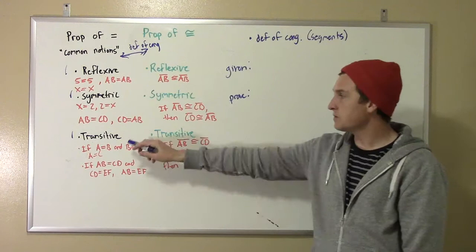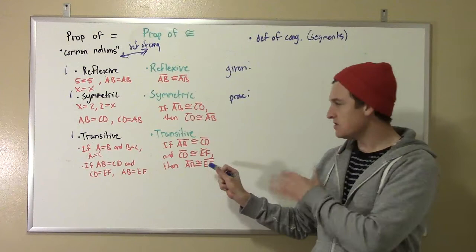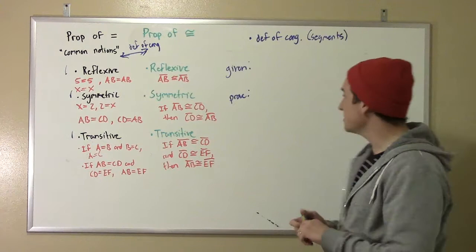So this we're taking as a common notion, or something that's obvious. This one we're saying, well, maybe you have to prove this to me, because I'm not so sure about congruence. And we're going to use a chain of logic here.